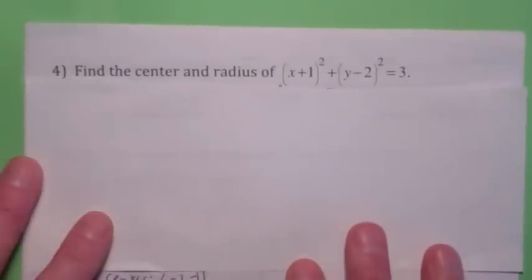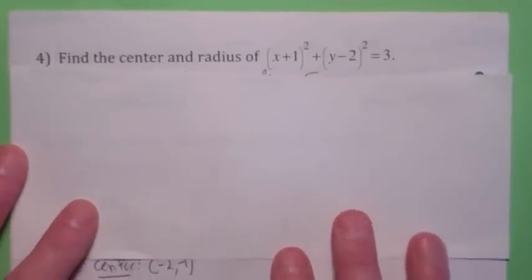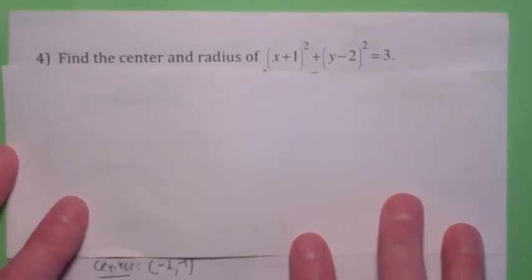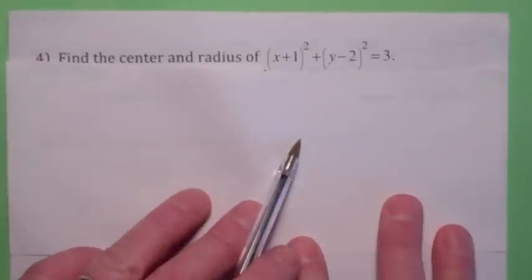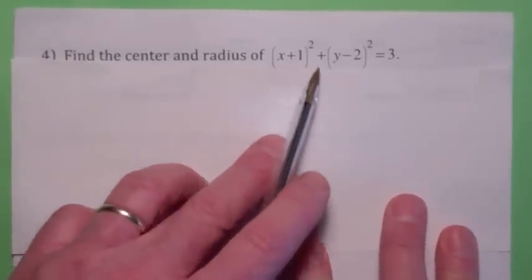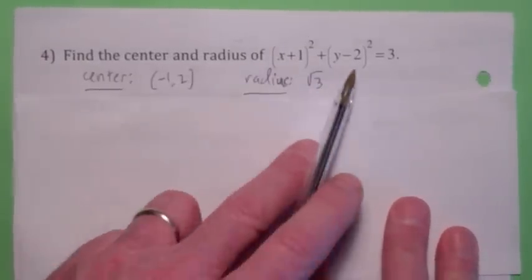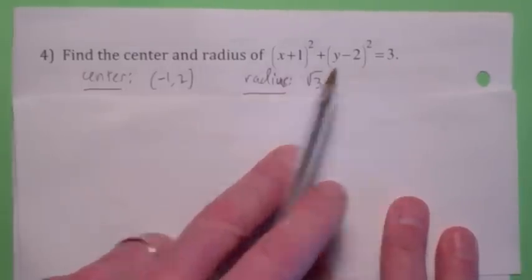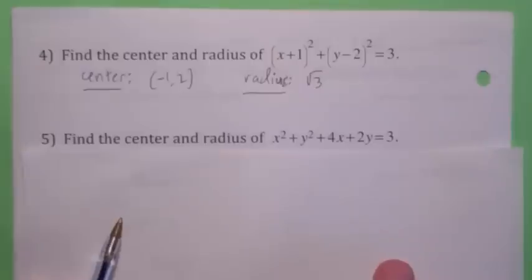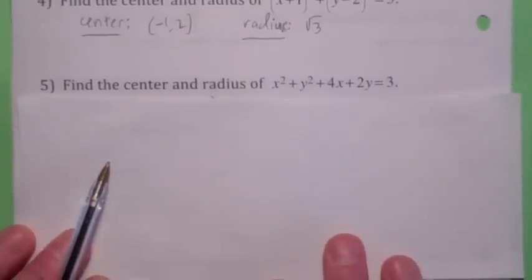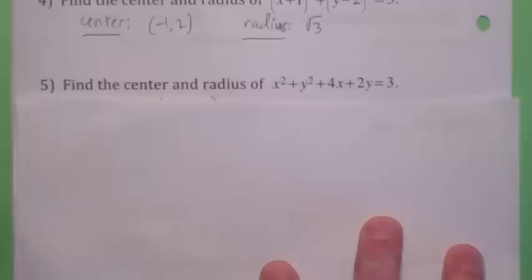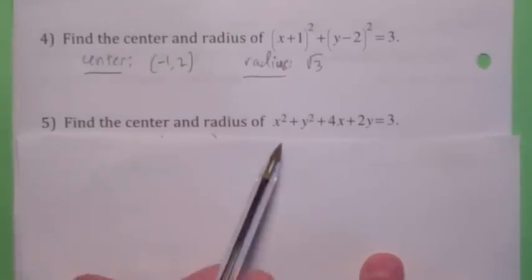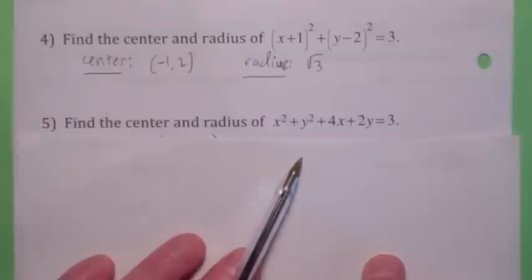If you're given the equation of a circle, how do you find the center and radius? If it's written in standard form, it's not too hard — the center would be (negative 1, 2), and the radius is the square root of 3, not 3, because the right-hand side is r squared. But what if the equation isn't in that form? You have to complete the square on the x terms and complete the square on the y terms.